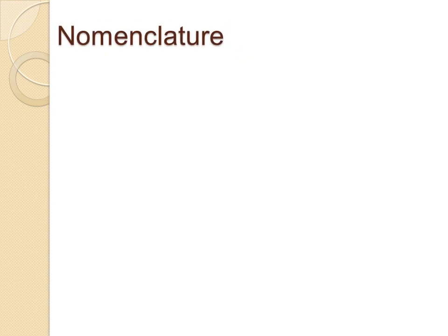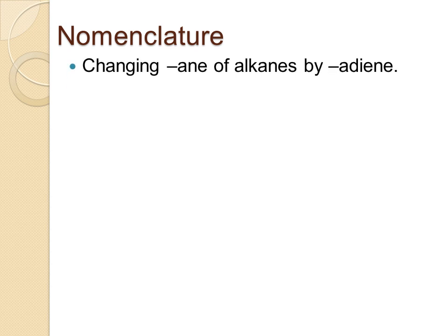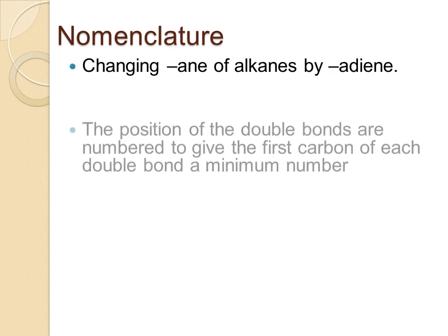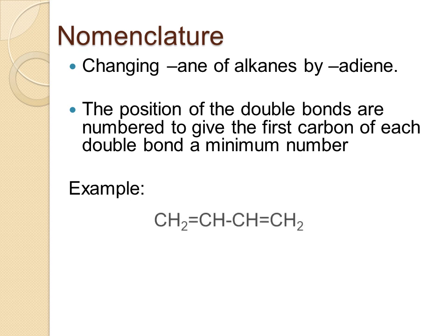Now let us see how to name dienes. Dienes are named by changing 'ane' of alkanes to 'adiene'. Usually the longest chain is chosen and the carbons are numbered 1, 2, 3, etc. The carbon which has a double bond is given the minimum number.